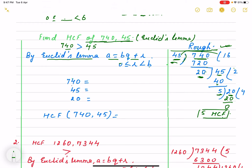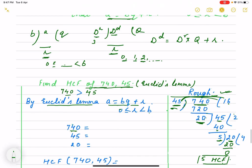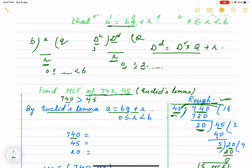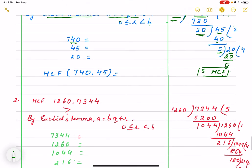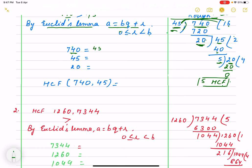Now, we state by Euclid's lemma A equals to BQ plus R where R lies from 0 and it is less than B divisor. Now, we start our steps. When we are writing steps, you go through the long division method and see what is our first step.